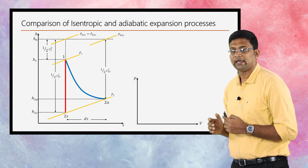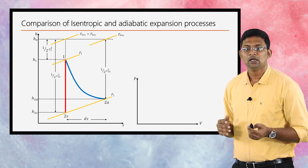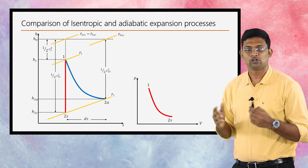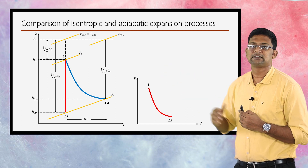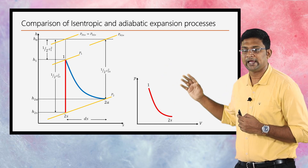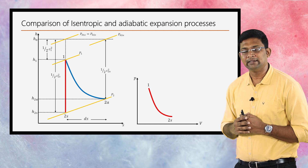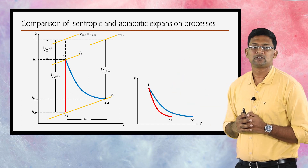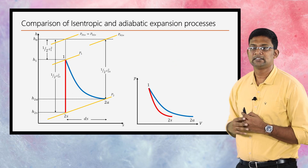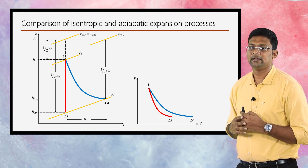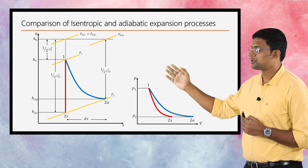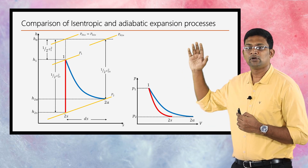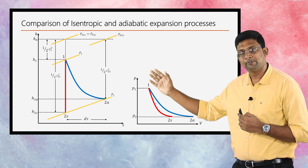Coming to the p-v diagram (pressure-volume diagram): the red one represents the isentropic process, with state 1 as the starting state and 2s as the ending state. Similarly, the blue one represents the adiabatic process, with 1 again as the starting state and 2a as the ending state. The corresponding pressure values can be represented accordingly. This completes the discussion of the expansion process.